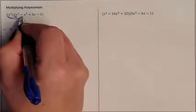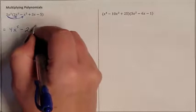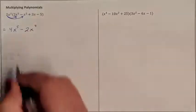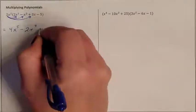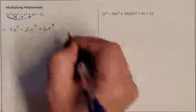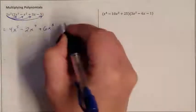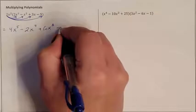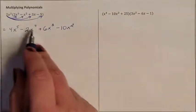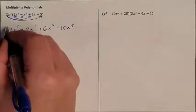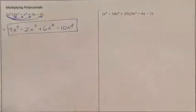2x squared times negative x squared is negative 2x to the fourth. 2x squared times 3x is positive 6x to the third. And 2x squared times 5 is negative 10x squared. Combining like terms, there are no other like terms to combine, so this is your final answer and you are done.